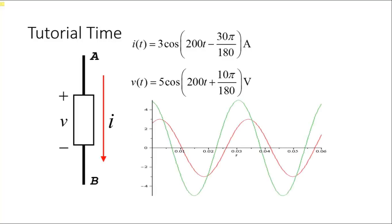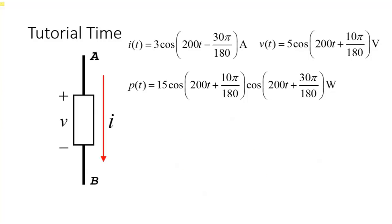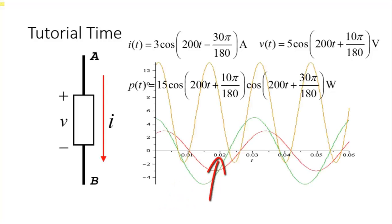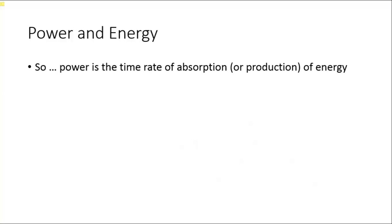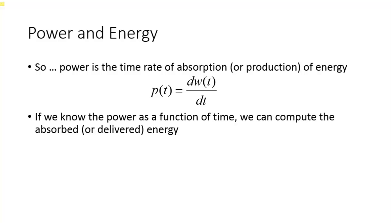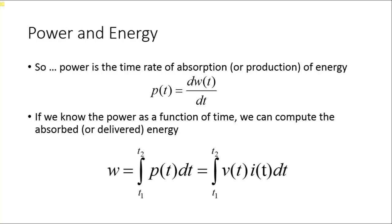Here we see both the current in red and the voltage in green in the element. Let's find out the power by multiplying V times I, and plot all three curves: voltage in green, current in red, and power in gold. Observe that power in the element is not constant — sometimes it's big, sometimes it's zero, sometimes it's negative. That element is absorbing power sometimes and delivering power other times. Interesting. We will revisit this a few lectures from now when we introduce AC systems.